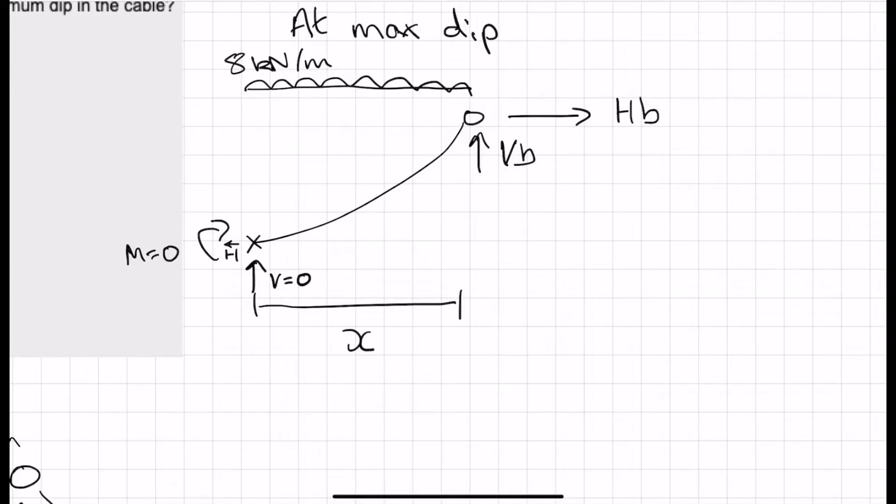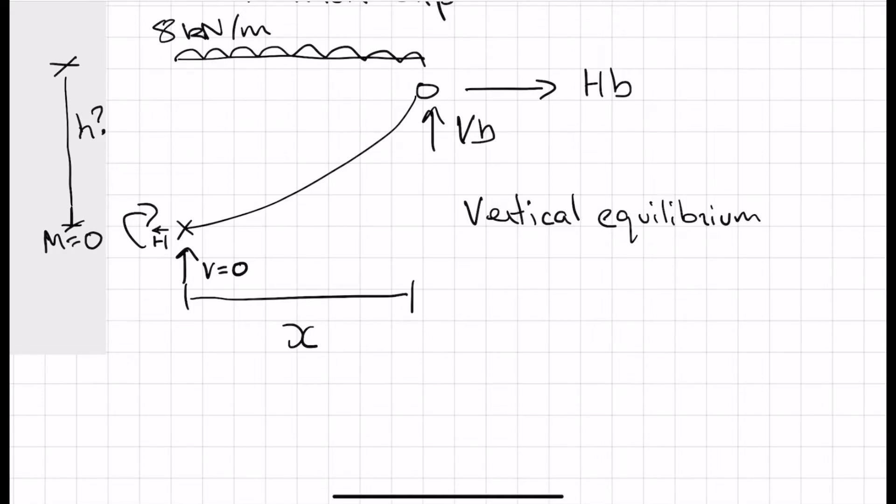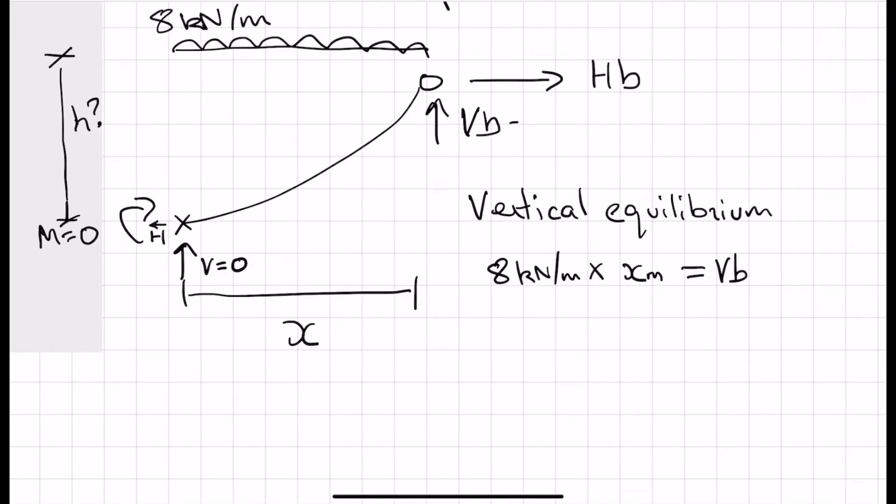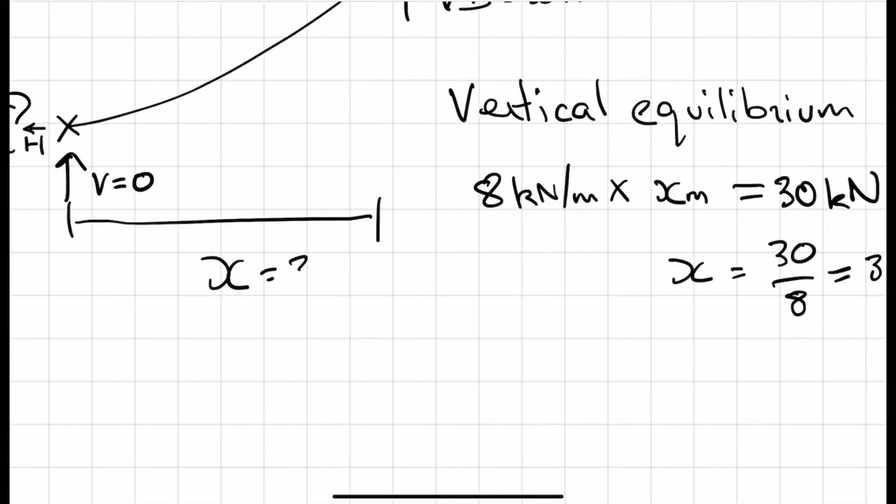So instead of looking at moments for this, we can look at the vertical equilibrium. Because that negates the need for that H at this point in time. Vertical equilibrium is 8 kilonewtons per meter times by X meters is equal to VB. VB, we already have, which was 30 kilonewtons. So let's actually scrub that out, that VB, 30 kilonewtons. Well, then X is equal to 30 over 8. And that is going to be 3.75 meters. Oh, good. Nearly gave myself a fright there. 3.75 meters. In which case, actually we can solve for the rest of it.